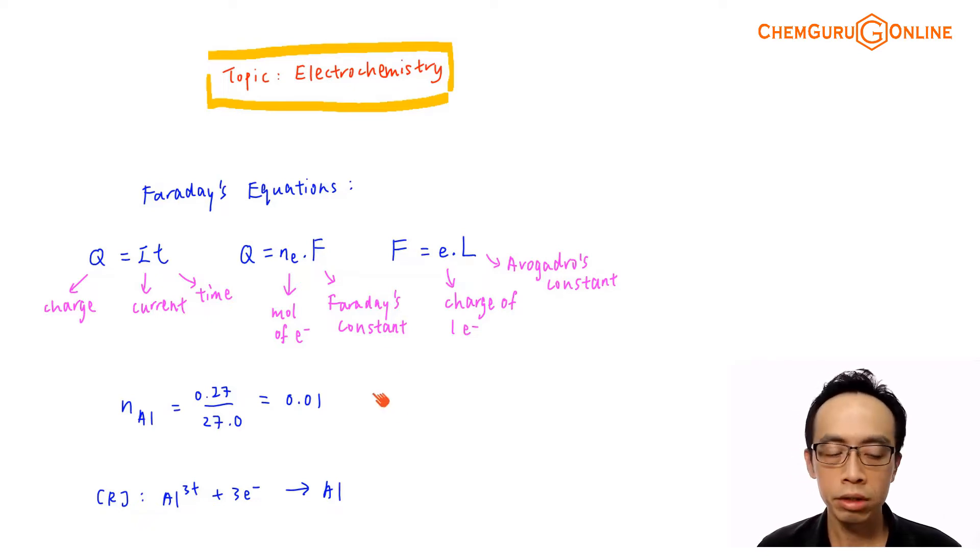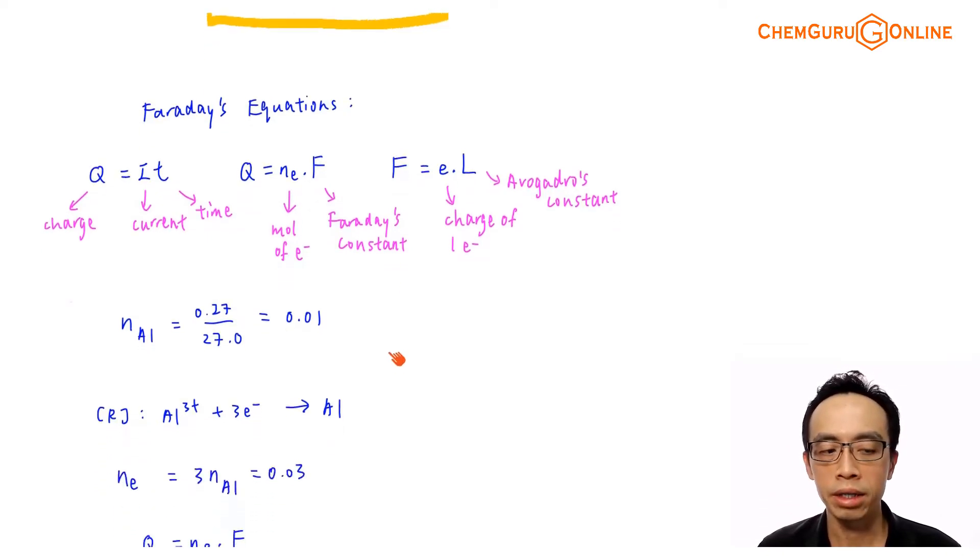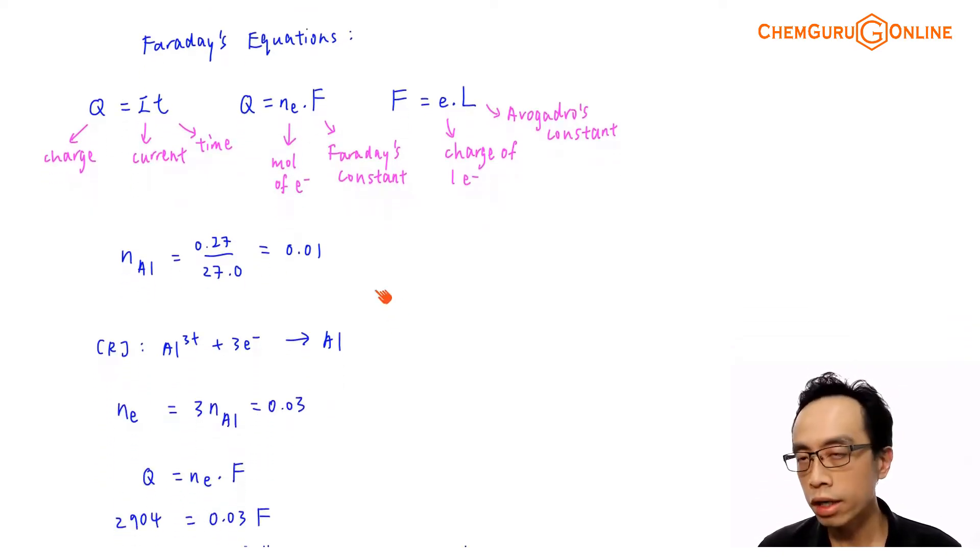So let us try to answer this question. The first thing we do is we find the number of moles of aluminum involved in the process, which is pretty simple. The mass of aluminum is given, 0.27, I divide this by the atomic mass for aluminum, the value will be 0.01. So for this electrolysis, the number of moles of aluminum discharged will be 0.01.